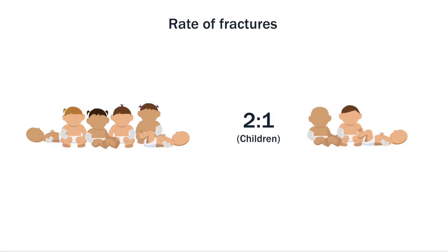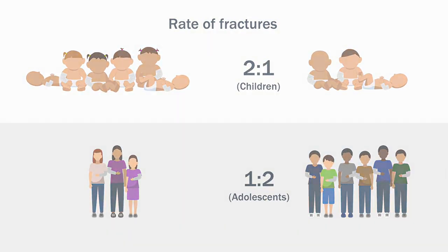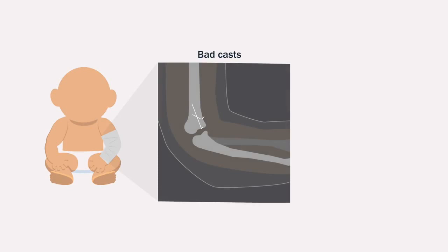This differed from the data collected from older children where fractures were more common in males. On examining the in-cast x-rays, the team found that many casts were poor-fitting, and malunions were significantly associated with a poor-fitting cast.